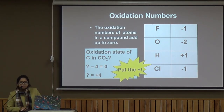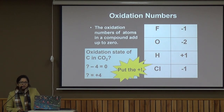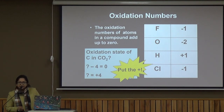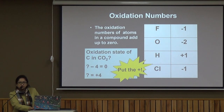What is the oxidation state of magnesium in magnesium chloride, MgCl₂? Chlorine is in the minus 1 oxidation state, and there are 2 chlorine atoms, so their total contribution is minus 2. Since the whole compound must be neutral, magnesium must have an oxidation state of plus 2.